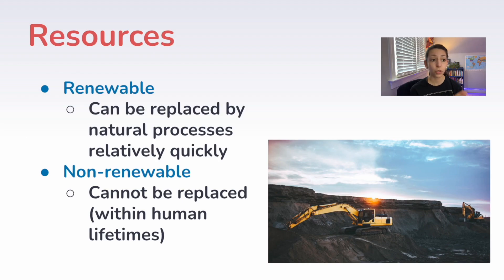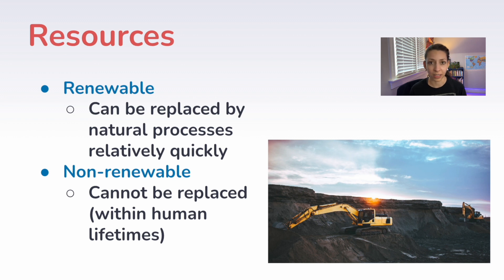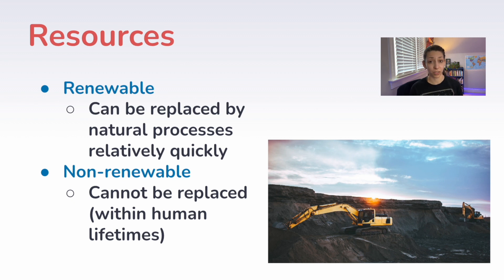Renewable resources are any natural resource that can be replaced by natural processes relatively quickly — generally within a human lifespan or at a rate faster than they are used. Non-renewable resources, on the other hand, cannot be replaced within a human lifetime. They come from natural processes like fossil fuels, but it takes millions of years for them to form. Once non-renewable resources are used up, they are gone. Examples include coal, oil, and natural gas. Renewable resources include things like wood and fish — but it's important to note that renewable resources can become non-renewable if humans use them up too quickly.